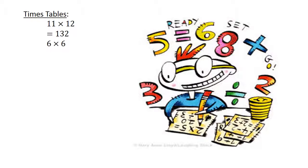6 times 6 equals 36. Addition: 17 plus 65 equals 82.